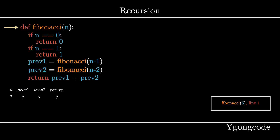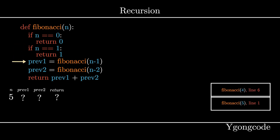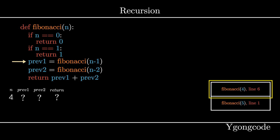Assuming we want to find the sixth number in the Fibonacci sequence, we will call Fibonacci(5) because we're using the zero-index definition. We will then add this call to the top of the call stack. Since n is 5, we skip the base cases and call Fibonacci(4) and add it to the call stack. Our recursion officially starts here.